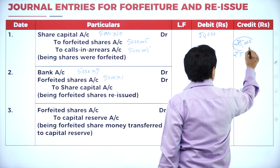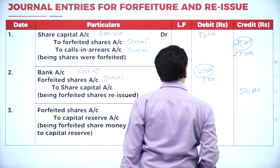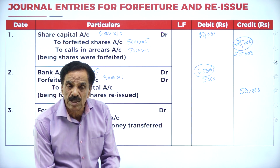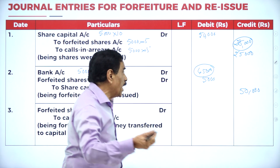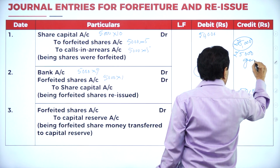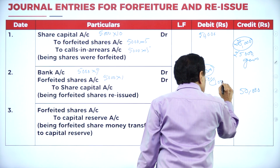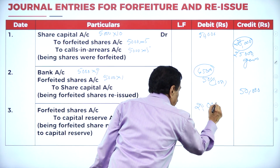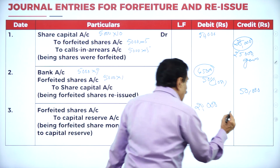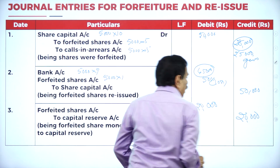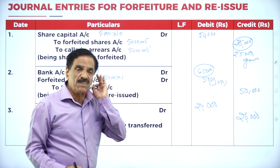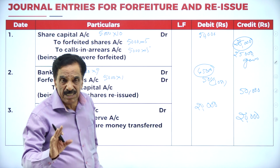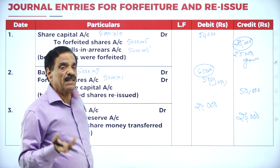For Capital Reserve: first received ₹25,000, then received ₹45,000, total ₹70,000. Actually require ₹50,000. Excess ₹20,000. Alternatively, gain ₹25,000 minus loss ₹5,000 = ₹20,000. Last entry: Forfeited Shares Account Dr. ₹20,000 to Capital Reserve Account ₹20,000. This excess amount is transferred to capital reserve account.